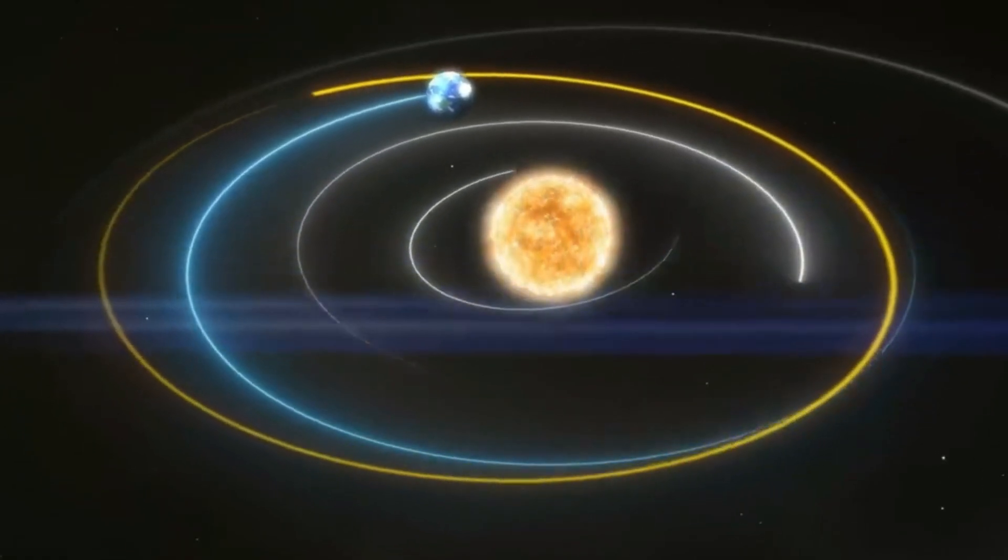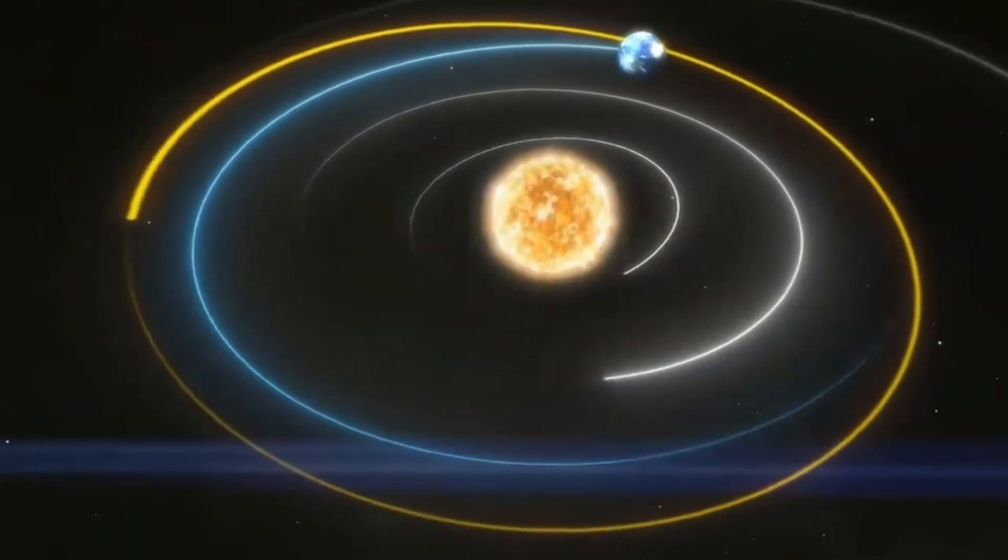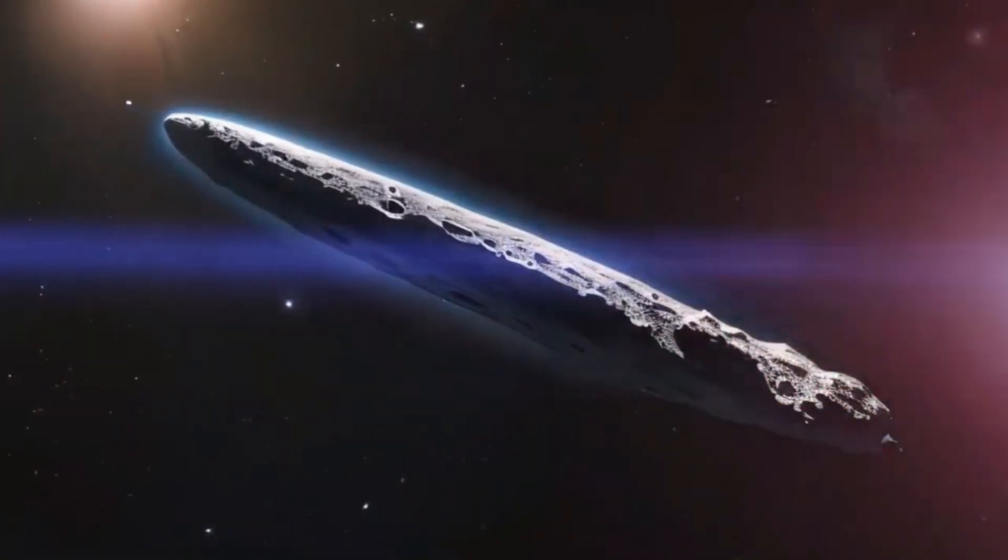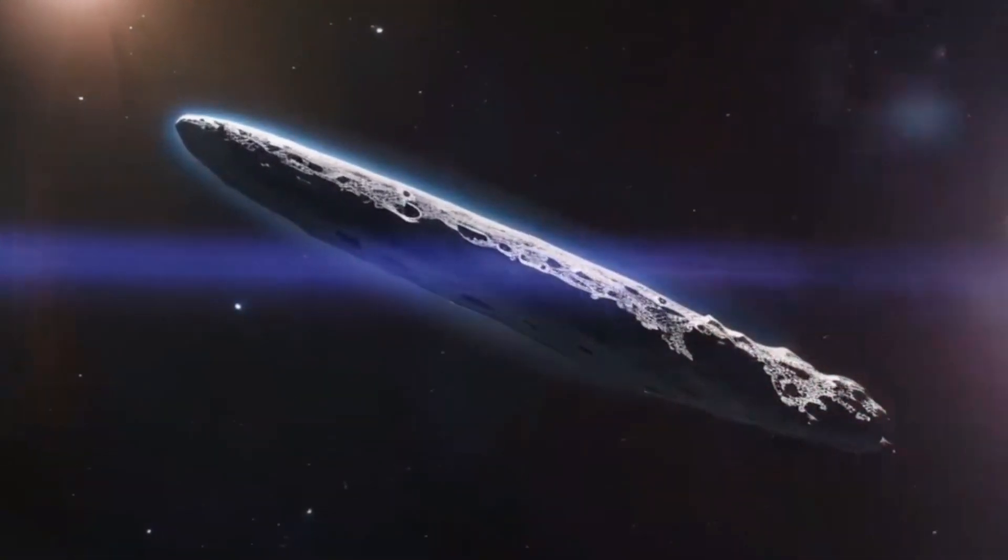Oumuamua was unlike any comet or asteroid previously observed in our solar system. Measuring approximately 800 meters in length and just 80 meters wide, its elongated shape raised questions about its formation.